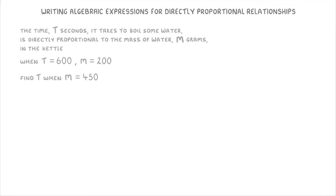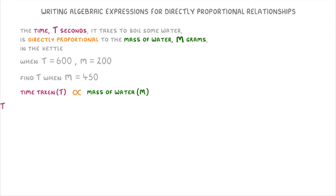The first thing we're told here is that the time in seconds that it takes to boil some water is directly proportional to the mass of the water, measured in grams, that's in the kettle. So basically the time taken, which we represent with the letter T, is directly proportional to the mass of water that we have, which we represent with the letter M. Or in algebra form, we could say that T is proportional to M.